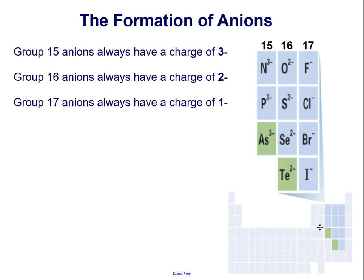Shown here is an expansion of the right side of the periodic table, excluding the noble gases which don't form ions. Shown are groups 15, 16, and 17. And it can be seen that group 15 elements always have a charge of -3. Group 16 elements always have a charge of -2. And group 17 elements always have a charge of -1. And that's due to the fact that that's how many electrons each group needs to add in order to reach a noble gas configuration.